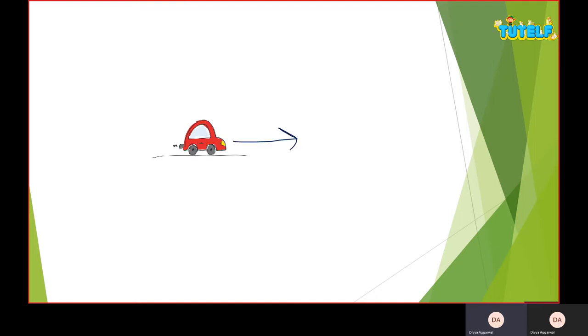You can see a car on the screen. If I say that you have to cover two kilometers distance, the car can go in any direction — it can go north, northeast, northwest, west — anywhere it wants, because we didn't mention the direction in which it has to go.